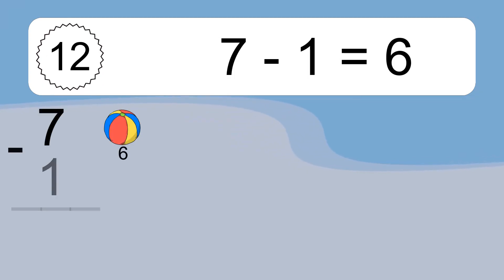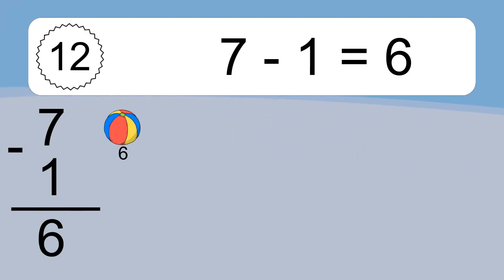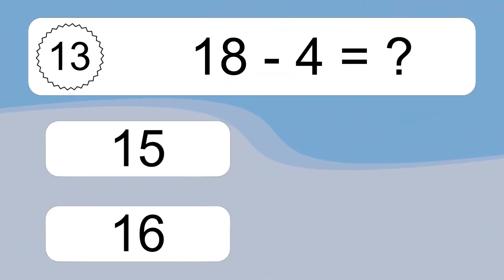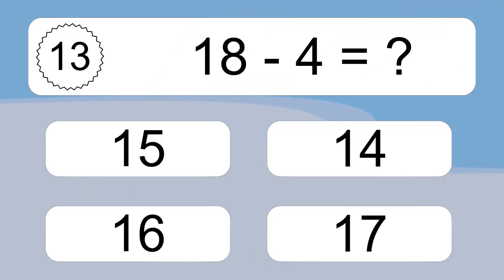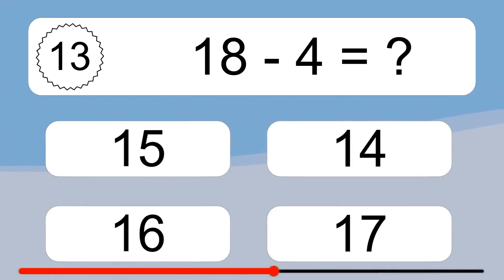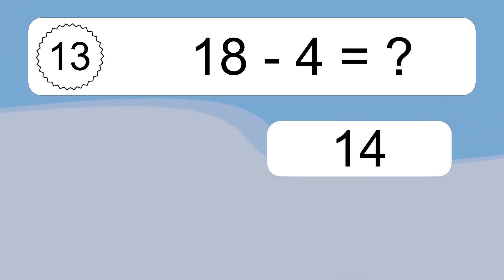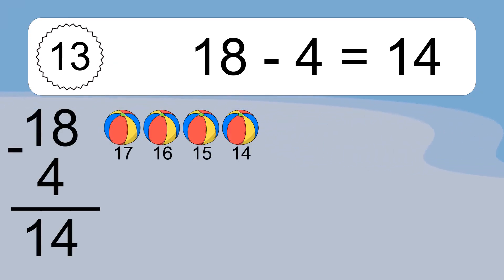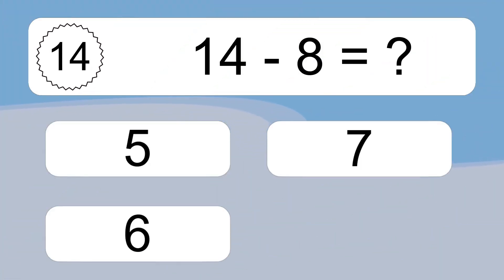7 minus 1 equals 6. Let's count it. 6. 18 minus 4 equals what? 18 minus 4 equals 14. Let's count it. 17, 16, 15, 14.